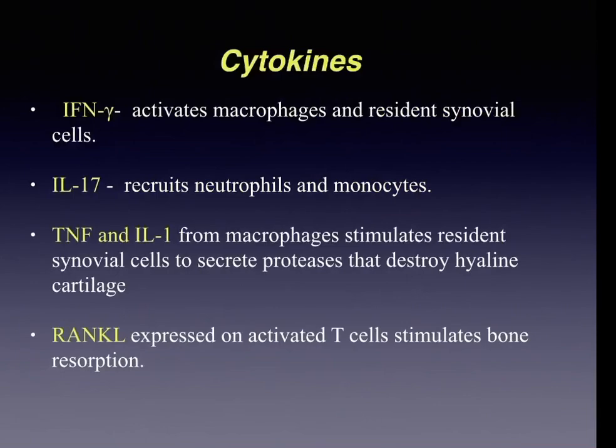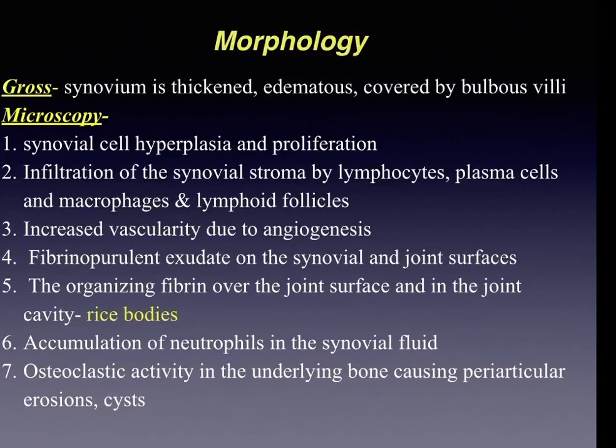Grossly, the synovium appears thickened and edematous, covered by bulbous villi. Microscopically, there is synovial cell hyperplasia and proliferation along with infiltration of the synovial stroma by chronic inflammatory infiltrate — lymphocytes, plasma cells, and macrophages — and increased vascularity due to angiogenesis. There is also fibrinopurulent exudate on the synovial and joint surfaces; organizing fibrin in the joint cavity gives rise to rice bodies. Neutrophil accumulation in synovial fluid and periarticular erosions from osteoclastic activity are also seen.